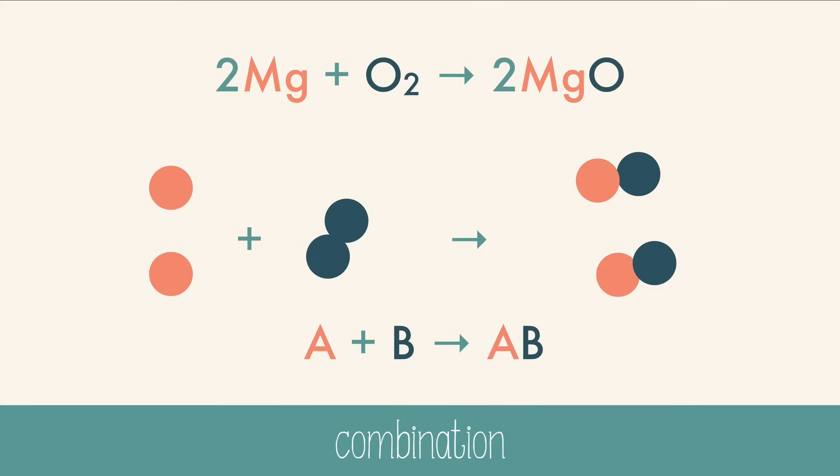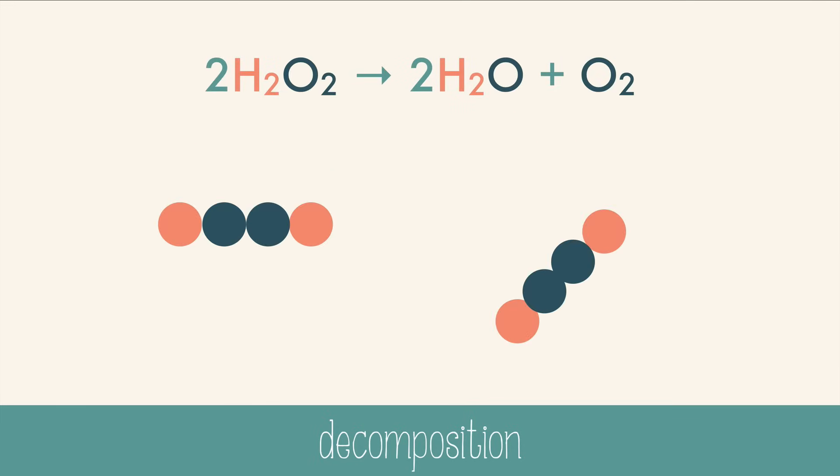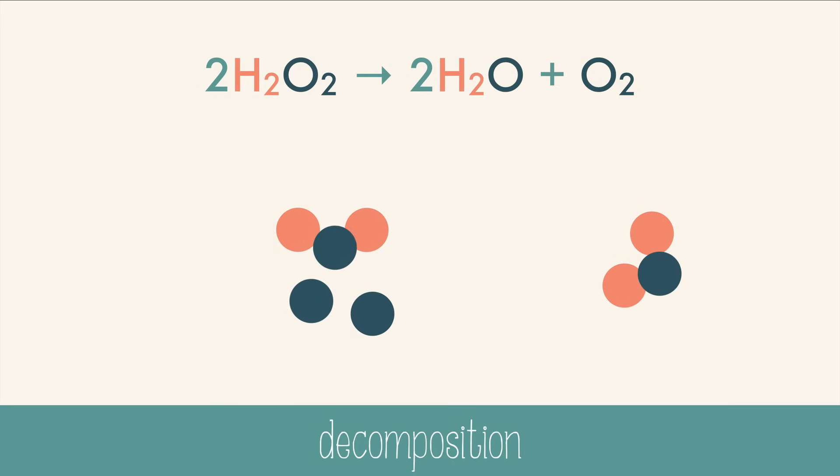The reverse version of this kind of reaction is called decomposition. In this reaction, things fall apart instead of coming together. A single substance breaks down into two or more simpler products. Here's an example of hydrogen peroxide breaking down into water and oxygen.